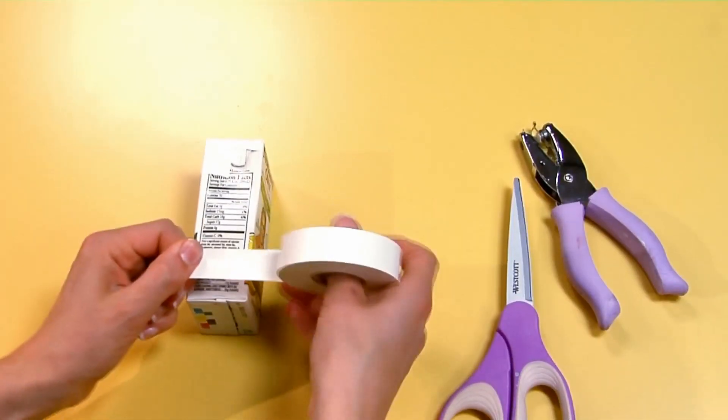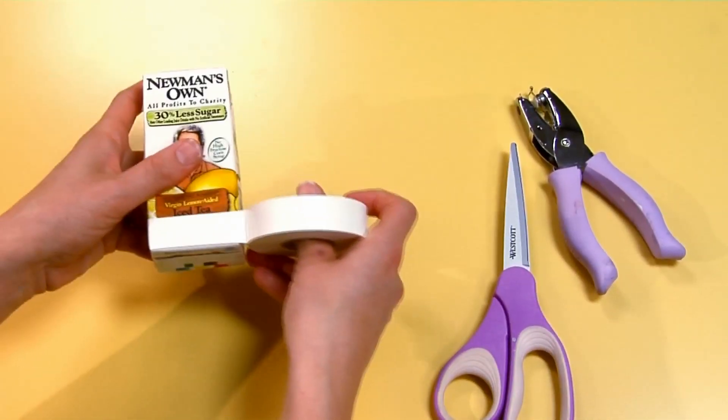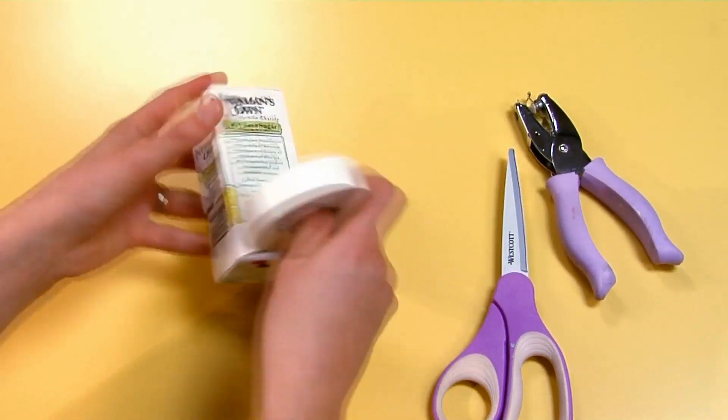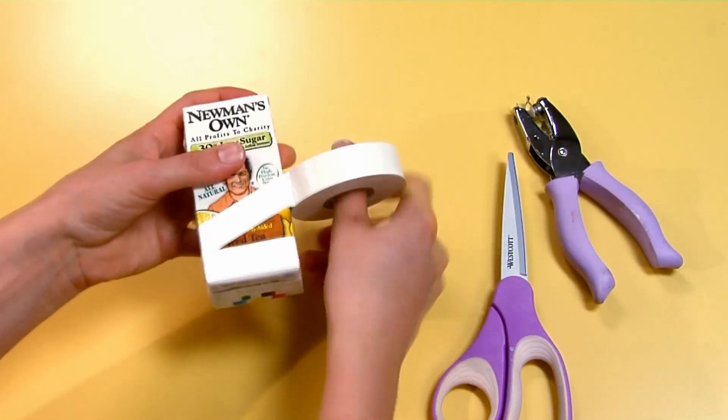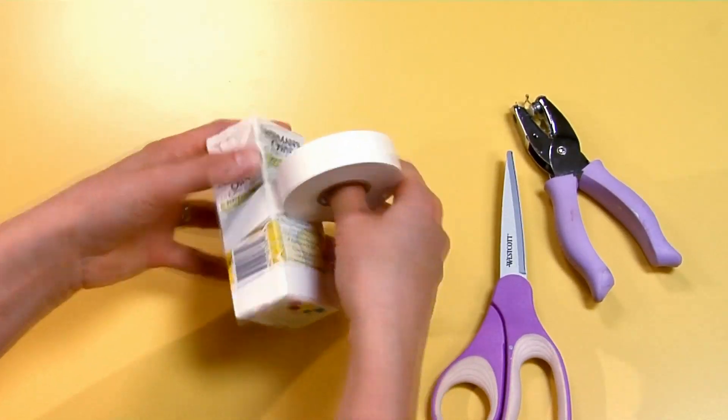Now we're ready to wrap the juice box. Take your tape, and starting at the bottom, just wrap it all the way around. The electrical tape is really easy to work with, so if you make a mistake, you can just go back, move it, and reposition it.